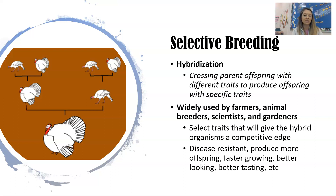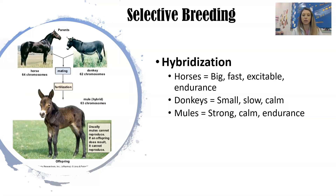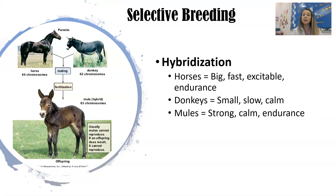Hybridization produces disease-resistant plants, organisms that produce more offspring, that are faster growing, better looking, or better tasting. A mule is a result of hybridization — we took horses which are very big, fast, excitable, and have a lot of endurance, and crossed them with donkeys which are slow, small, and very calm. We ended up with mules that have traits of both: very strong, very calm, with a lot of endurance — kind of like the best of both worlds.